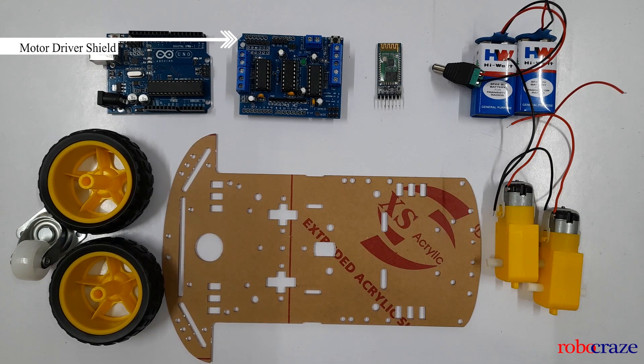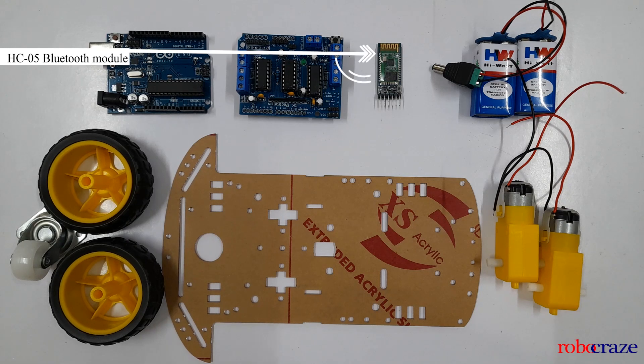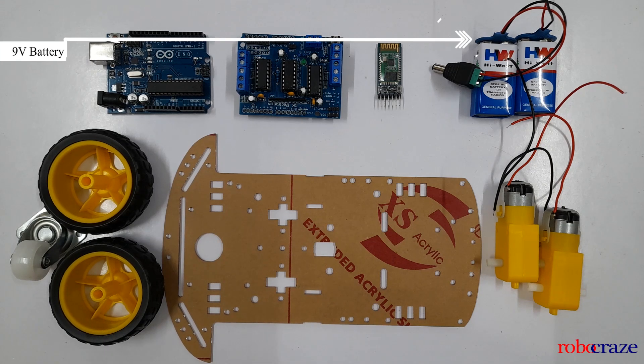We are also using HC-05 Bluetooth module which enables wireless communication between your smartphone and Arduino Uno. It lets you send and receive commands facilitating remote control of your car. We'll be using a couple of 9 volt batteries with a DC male jack. The DC jack allows us to connect the batteries to the Arduino easily.